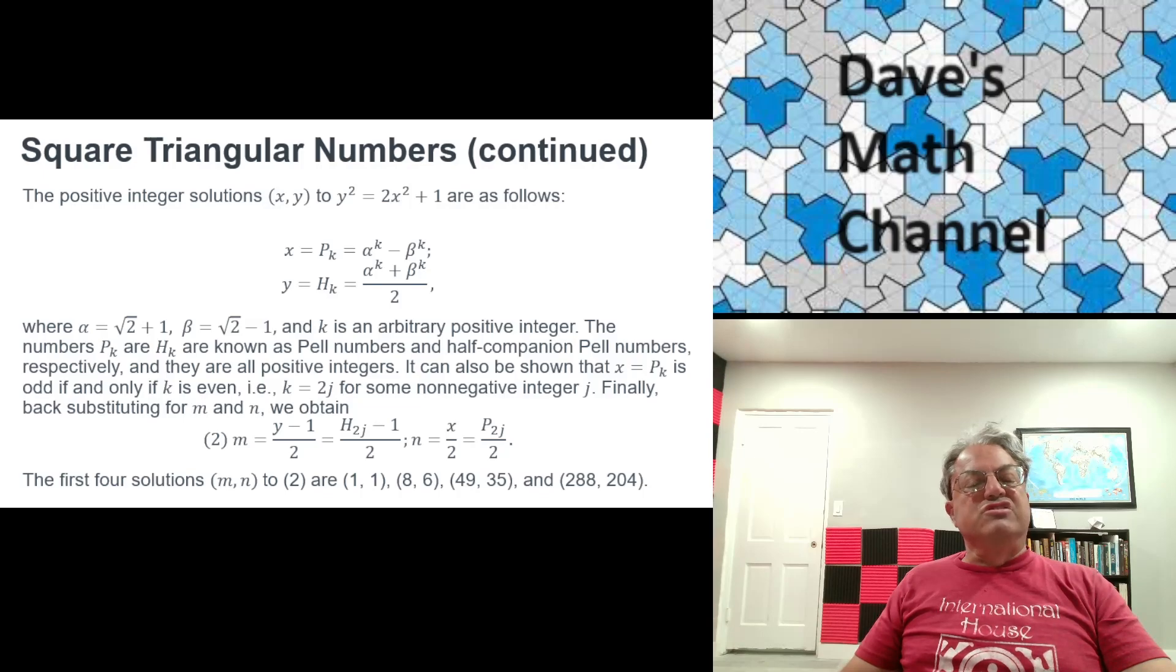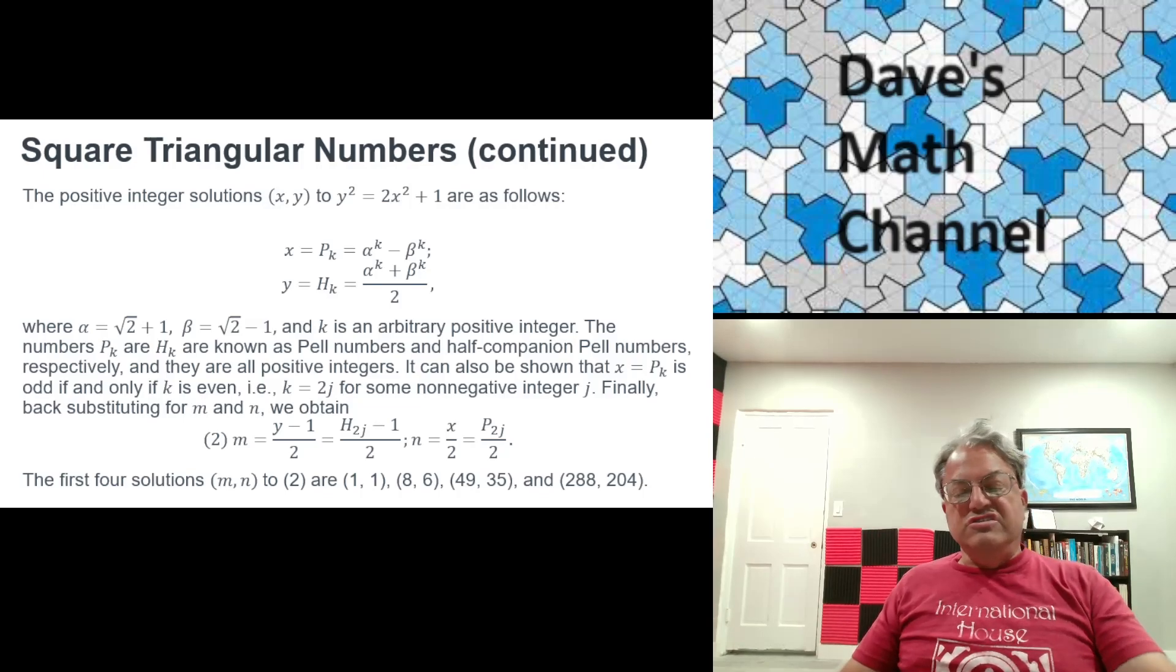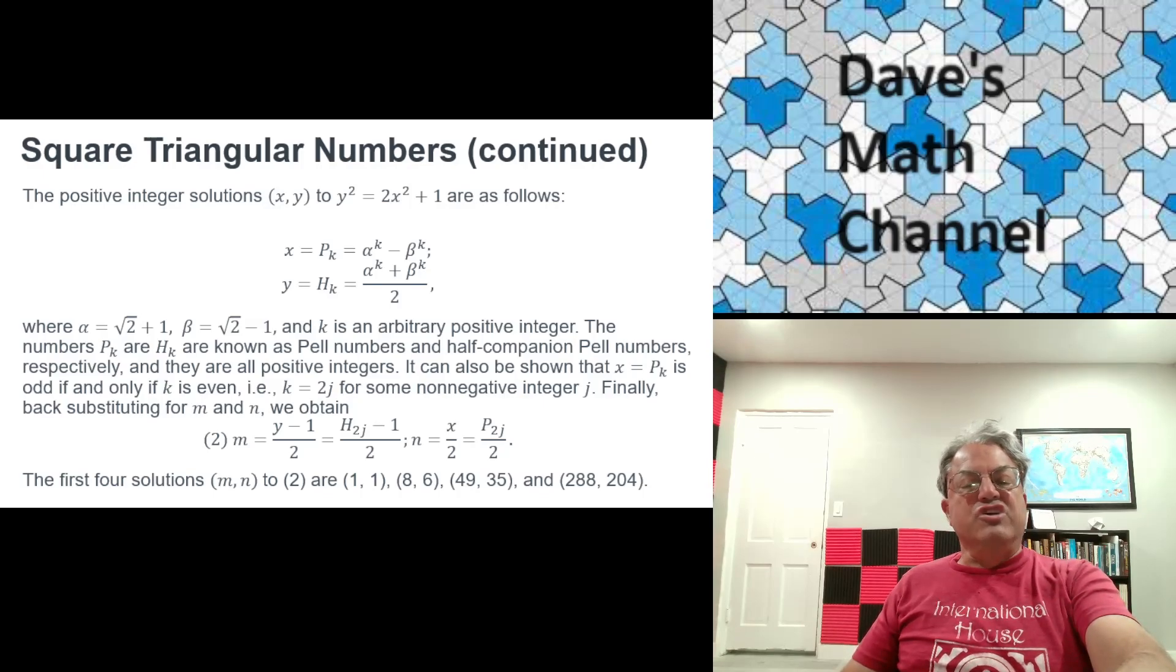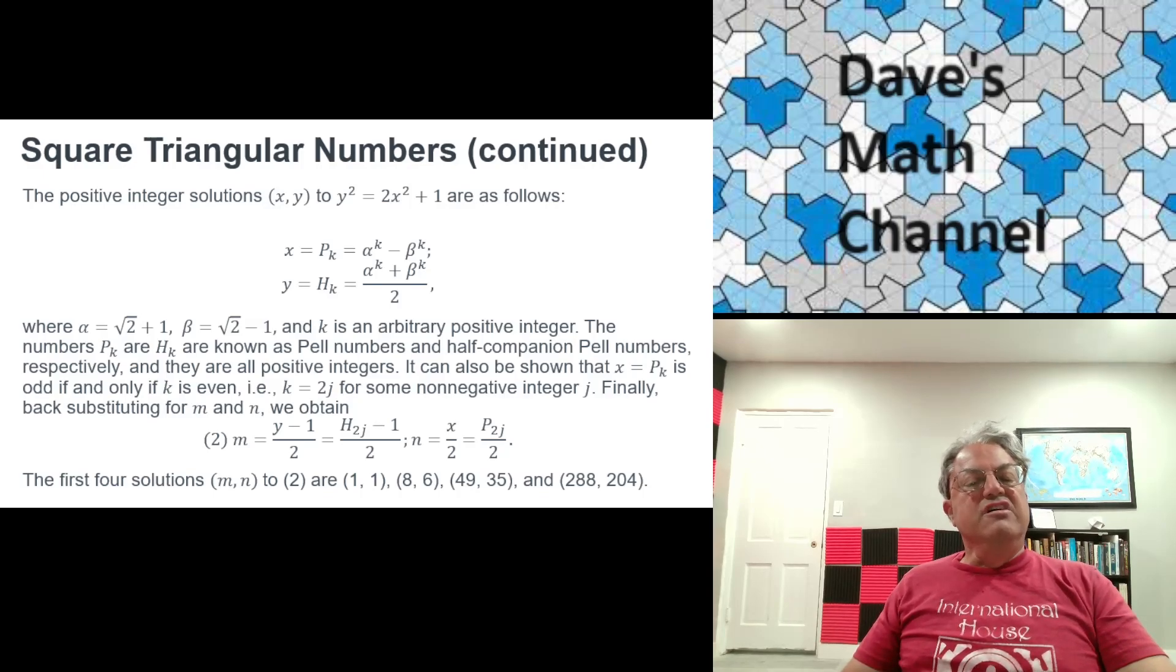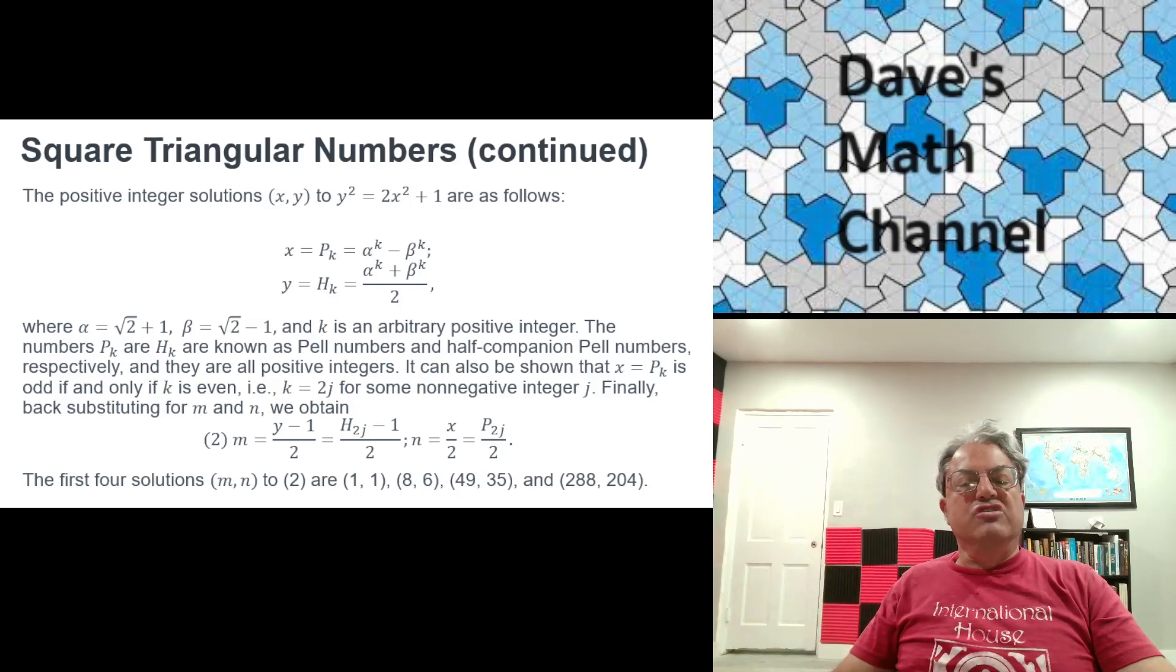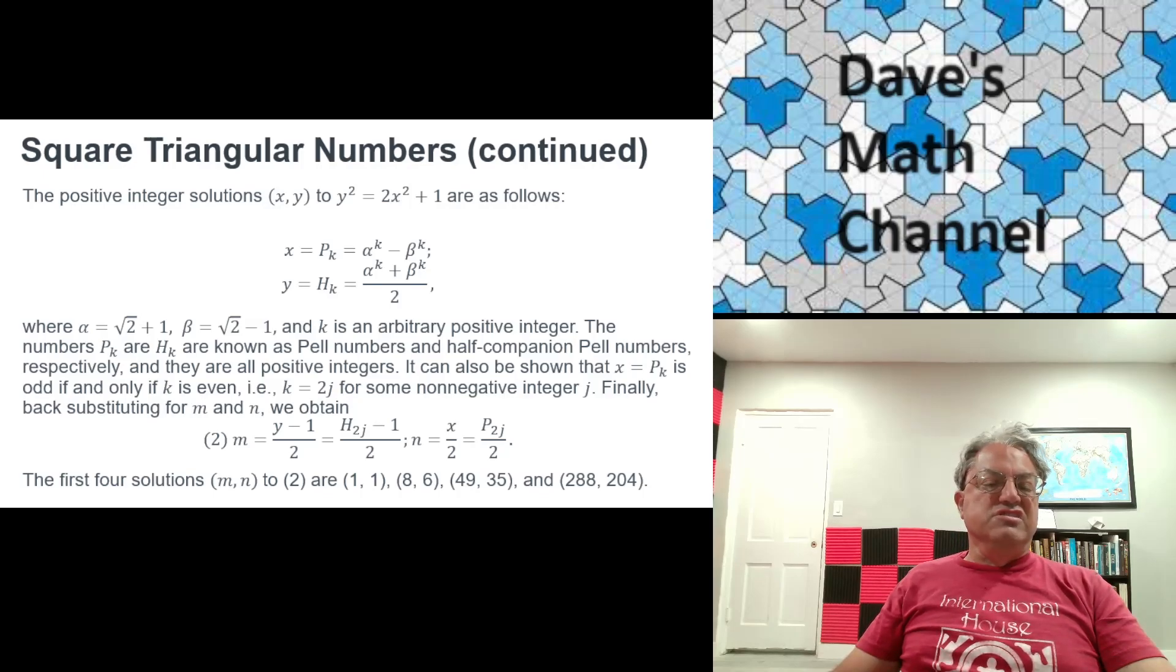And then the first interesting solution, I think, is 8 comma 6. That was the one I showed on the top slide. The eighth triangular number equals 6 squared. And then these things grow pretty fast. The next solution is 49 comma 35. It turns out the 49th triangle number is equal to 35 squared. The next solution is 288 comma 204. So the 288th triangular number is equal to the 204th square, 204 squared. And you can keep going like this. These solutions roughly go up by a factor of 6 each time. They grow exponentially, very fast.